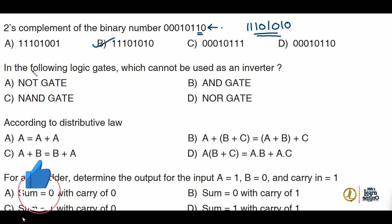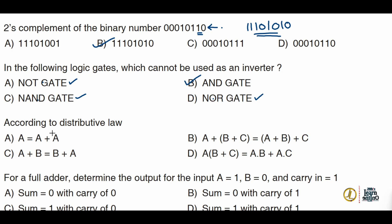Next question: which of the following logic gates cannot be used as an inverter? NOR gate is an inverter. NAND and NOR are universal gates, so they can construct every gate, including inverters. Therefore, NOR gate, NAND gate, and NOR gate can be used as inverters, but the AND gate cannot be used as an inverter. The correct option is option B.